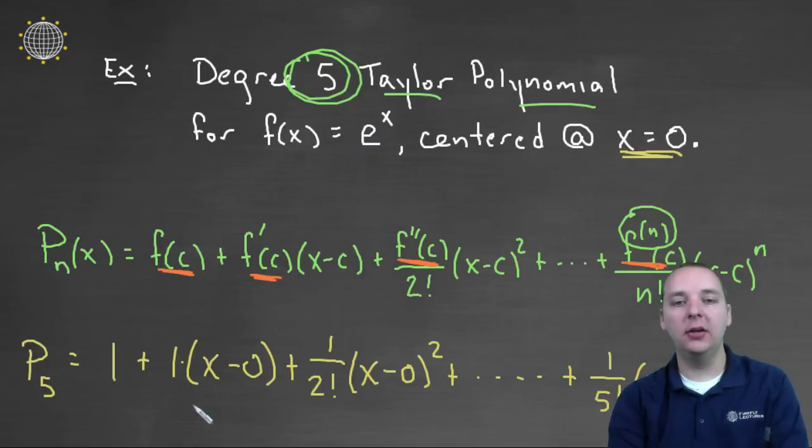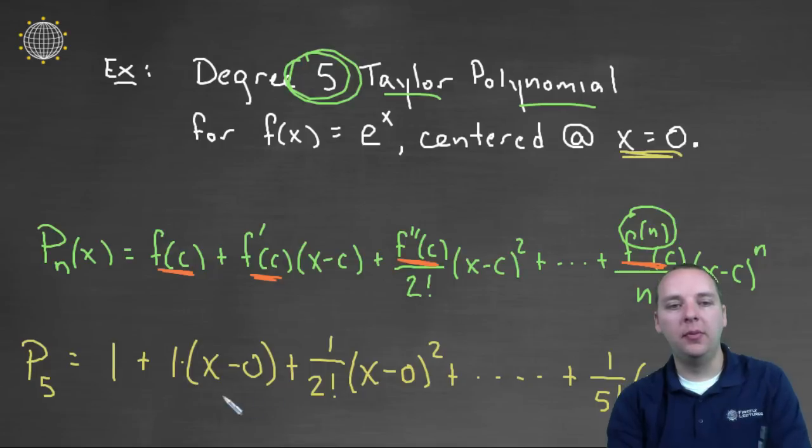Now clearly we can clean this guy up a little bit, I think we can make this look a lot better. Let's see, p sub five of x, polynomial of degree five, that will be one plus x plus, let's read off these terms again, plus x, plus x squared over two factorial, x squared over two factorial.